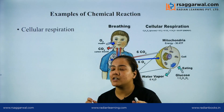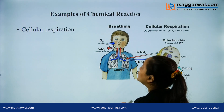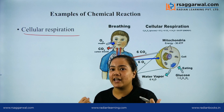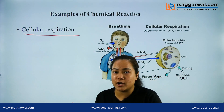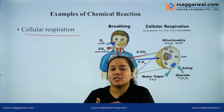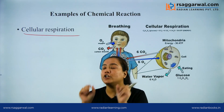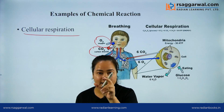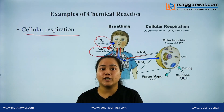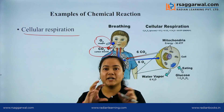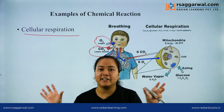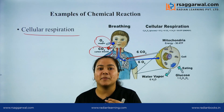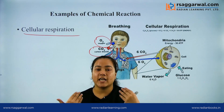Now let's discuss some examples of chemical reaction in our day-to-day life. The first example is cellular respiration. When we are respiring, we are inhaling oxygen from the atmosphere and exhaling carbon dioxide. Our body is converting a molecule of oxygen into a molecule of carbon dioxide. This is a chemical reaction because our body is converting one kind of chemical substance into another — the properties of oxygen and carbon dioxide are entirely different. So it is a chemical change taking place inside our body.